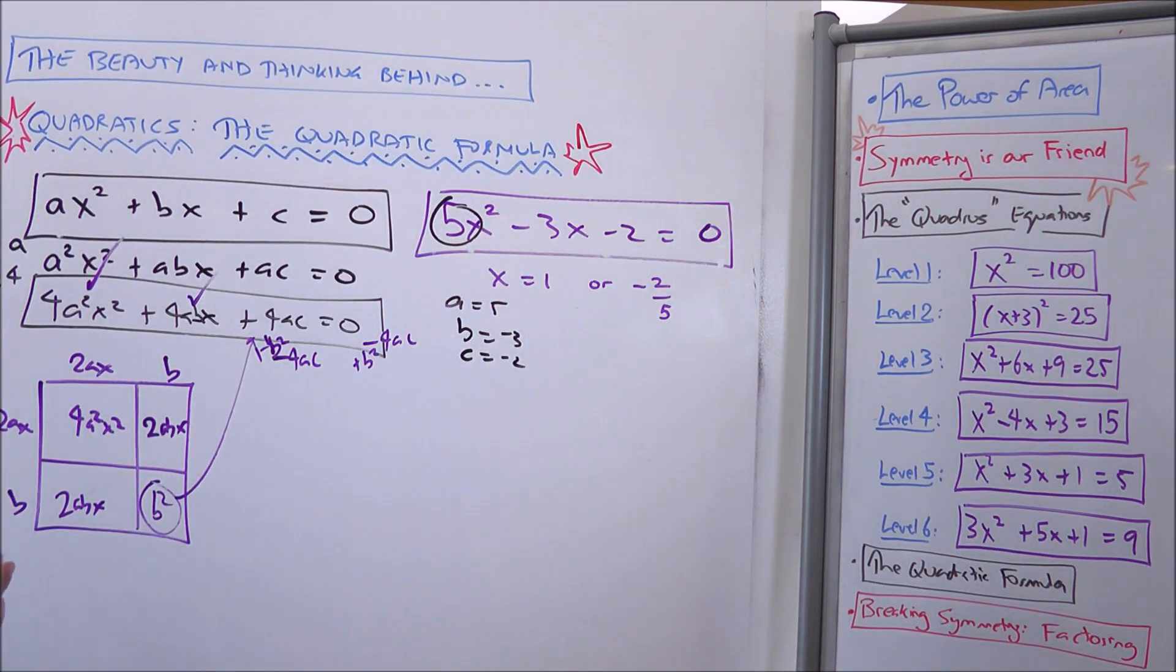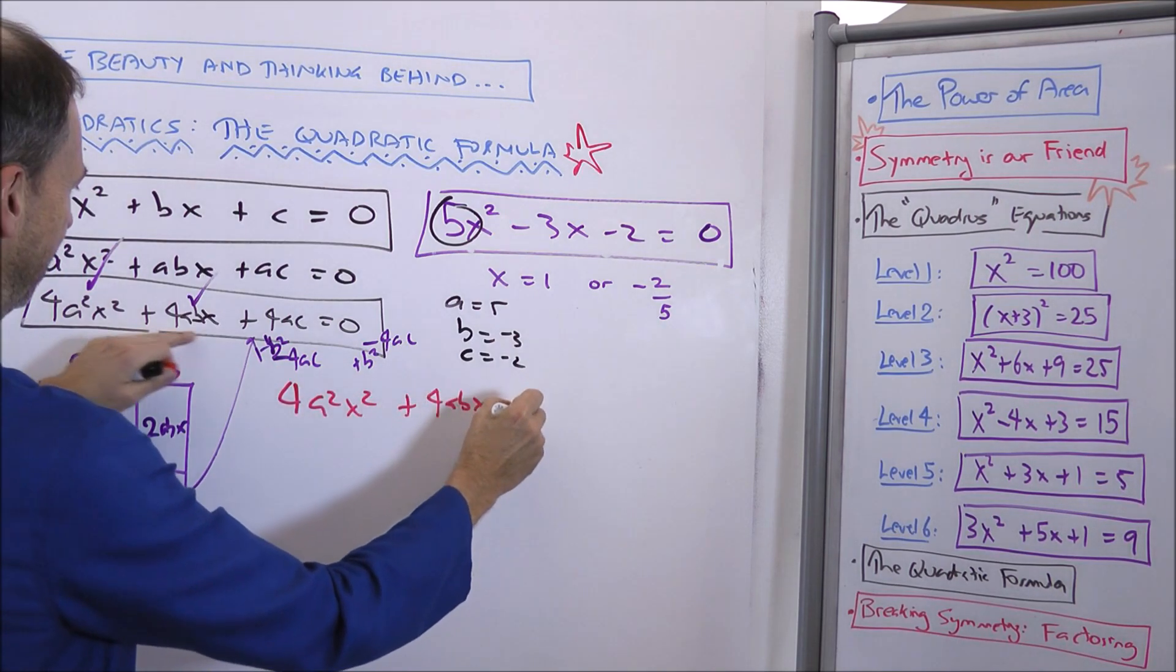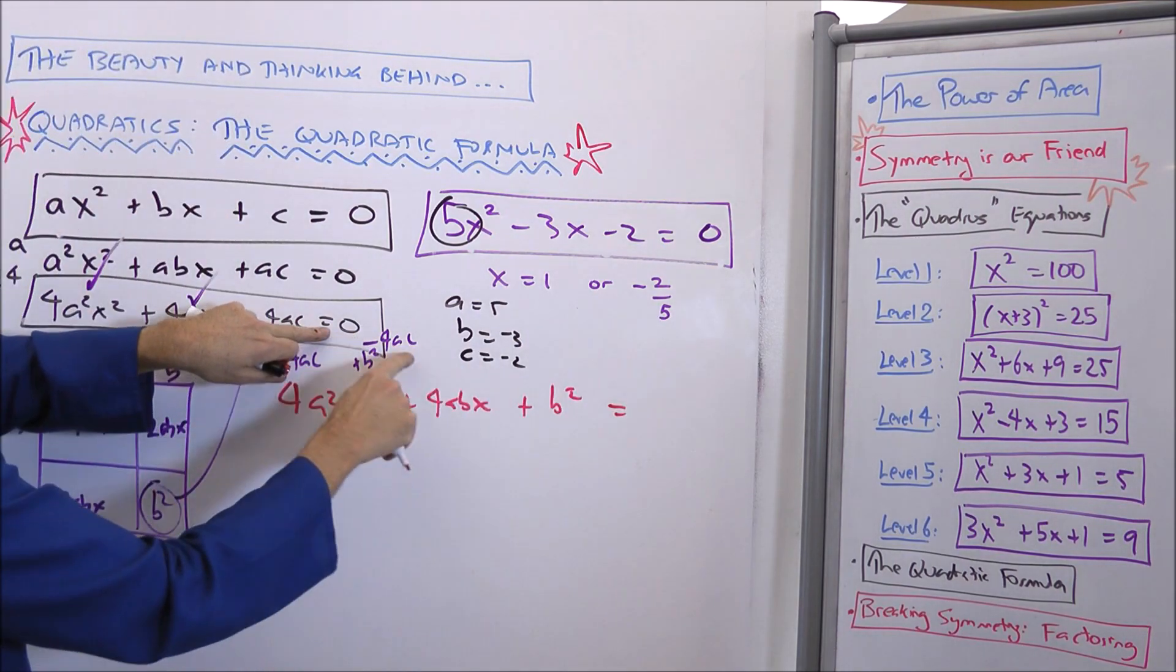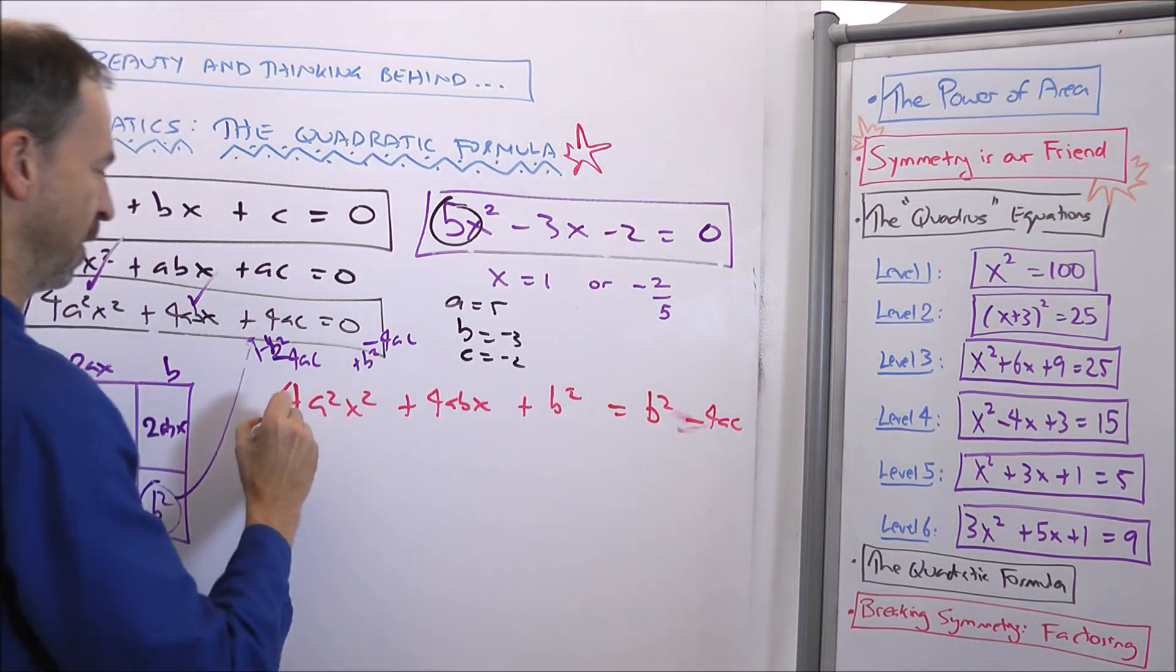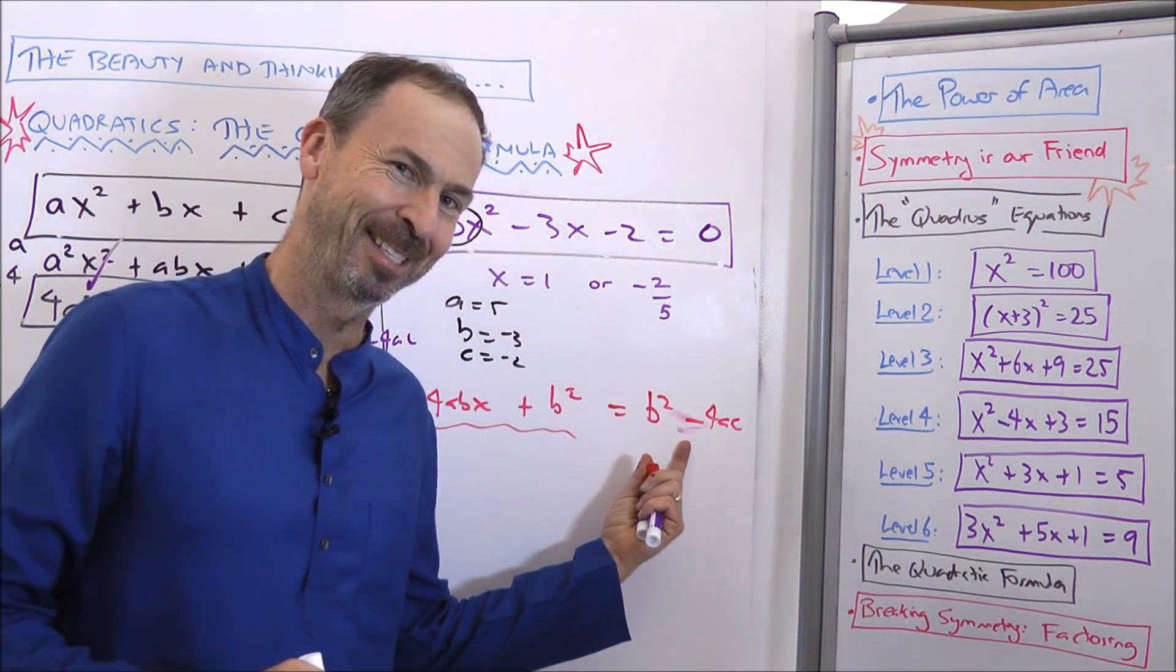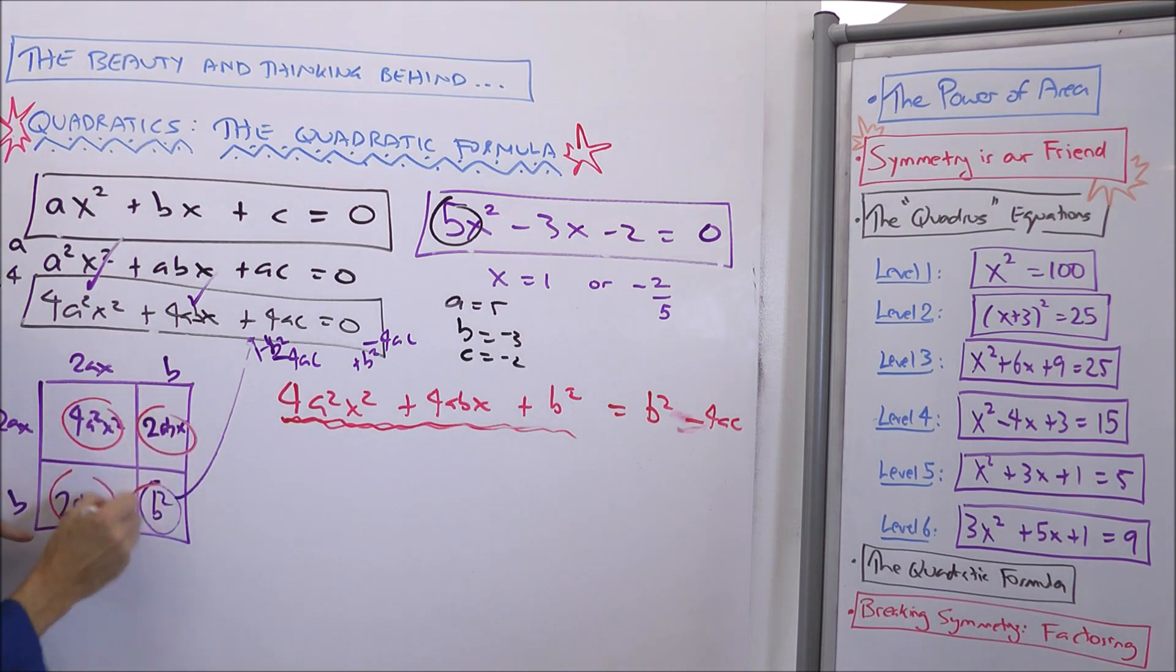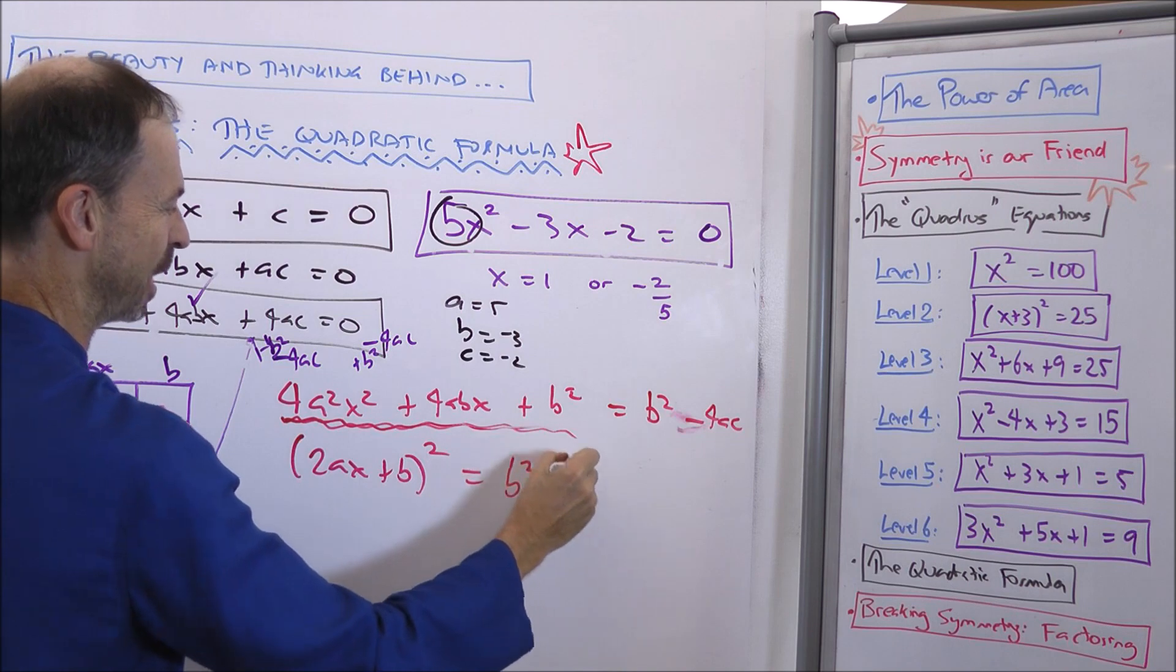So what does my equation look like? I'll do it in red now, just to make my board a little bit more clearer. 4a squared x squared plus 4abx plus b squared. So I took away the 4ac and I added a b squared. Equals zero, take away 4ac, add a b squared. So I've got a b squared and I've got a negative 4ac. So I've got this crazy equation equals b squared minus 4ac. If you've seen this formula before, you might be thinking, hmm, b squared minus 4ac. That's interesting.